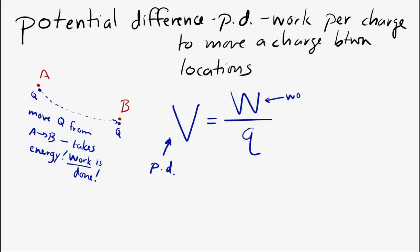W is the amount of work that you did to move the charge, and Q is the amount of charge that you moved. The unit of potential difference is the volt, and that is the same as the joule per coulomb, which you can see from the equation.